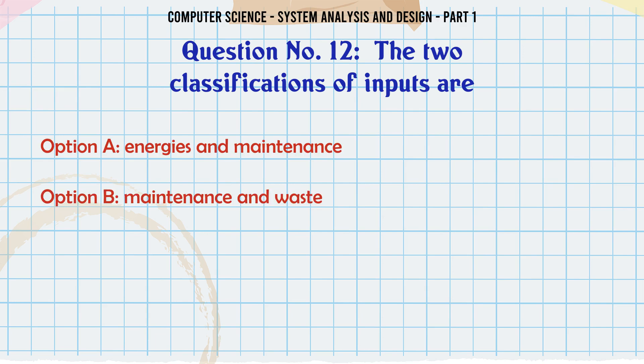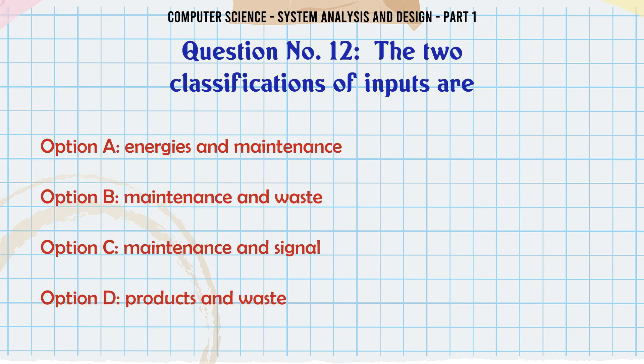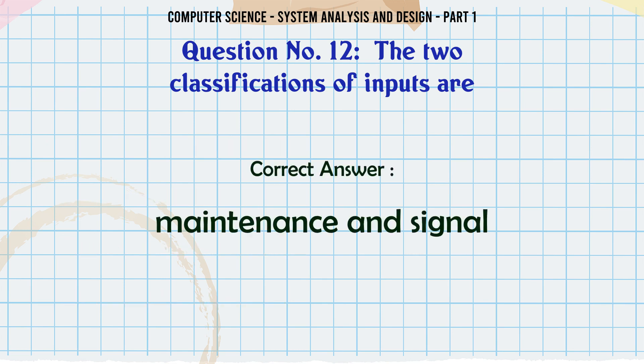The two classifications of inputs are: A. Energies and maintenance. B. Maintenance and waste. C. Maintenance and signal. D. Products and waste. The correct answer is: Maintenance and signal.